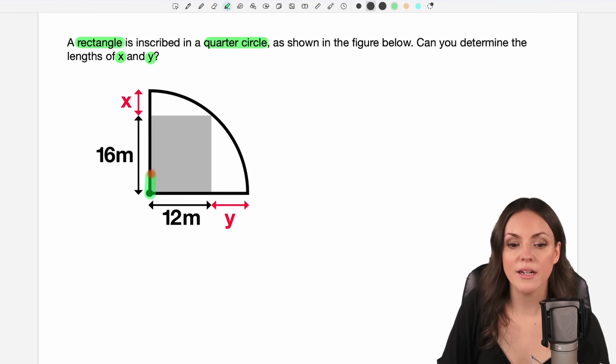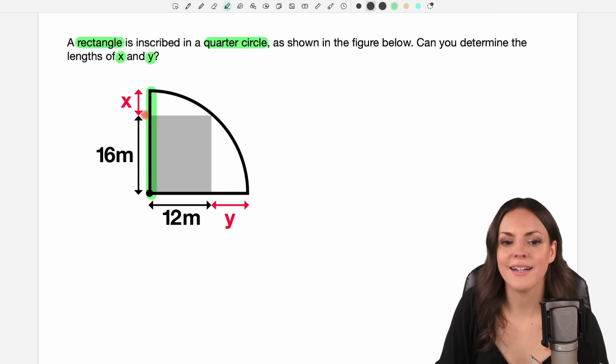And the same here, this is my radius as well. And if I knew the radius, I can find the length of x as well. So let's try and find the radius of our quarter circle.